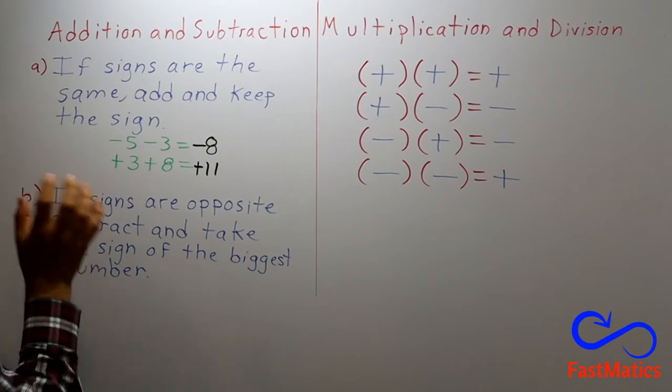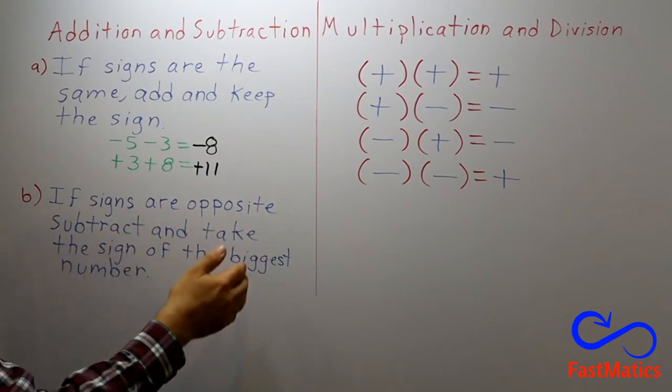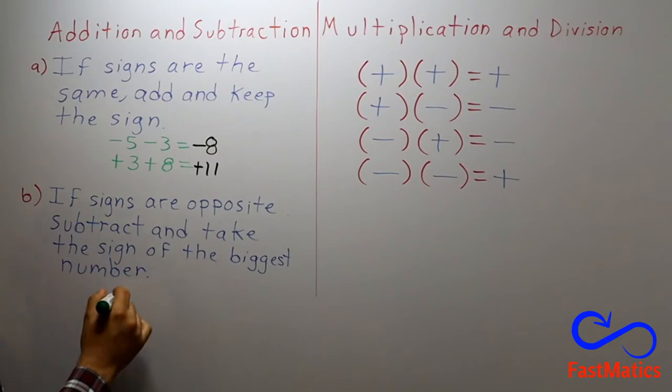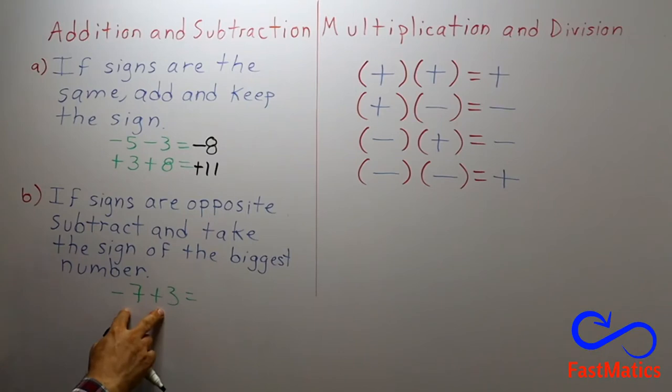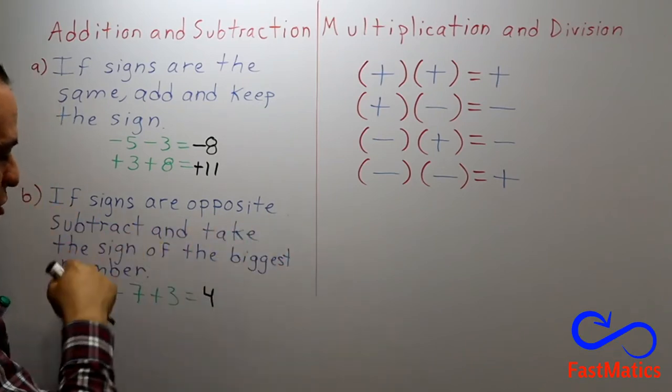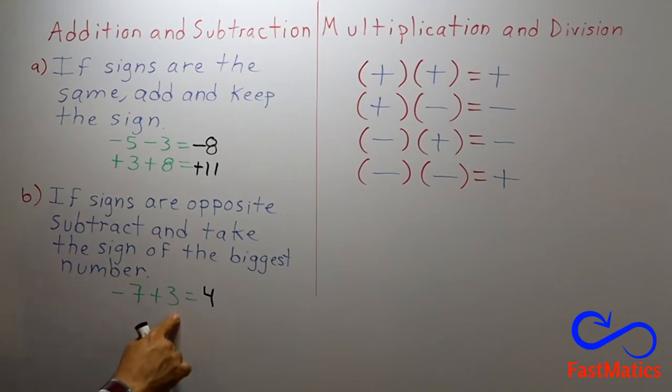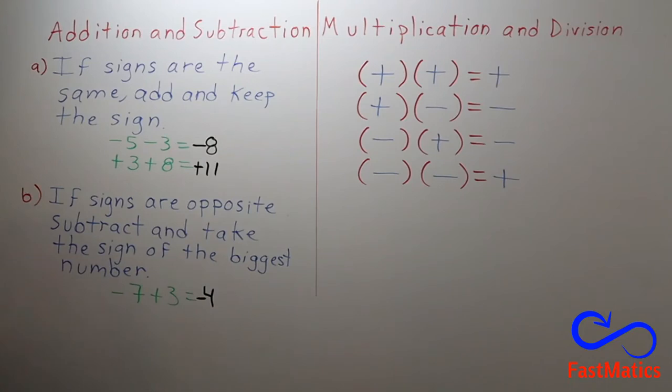The second rule, very important rule. If signs are opposite, subtract and take the sign of the biggest number. So, for instance, negative seven plus three equals. Here we have different signs. So, you subtract seven minus three, four. And you take the sign of the biggest number. What's bigger? Seven or three? Seven. What's its sign? Negative sign. So, the answer will be negative. Why? Because if you owe seven and you pay three, you owe four.